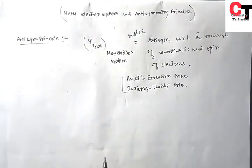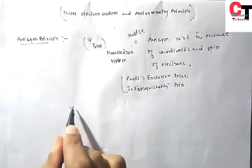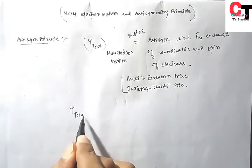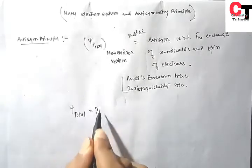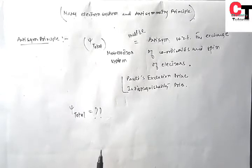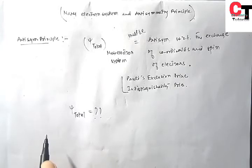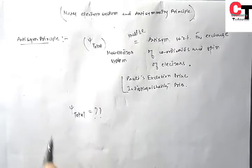Now let's find out what is the total wave function for a Many Electron System. For a Many Electron System, the total wave function consists of two parts: one is the spatial part and another is the spin part.